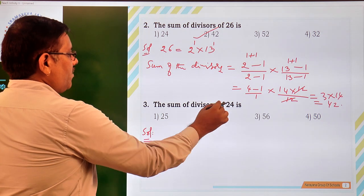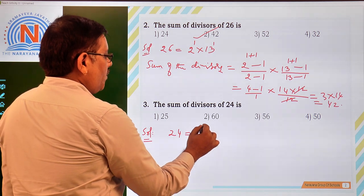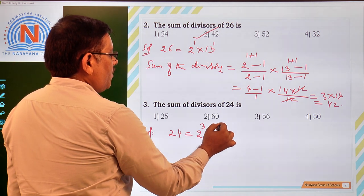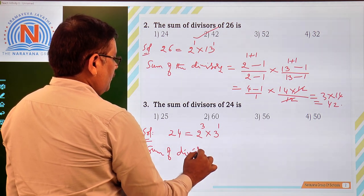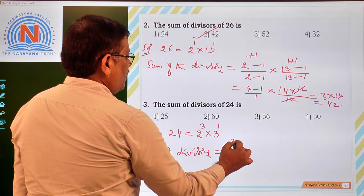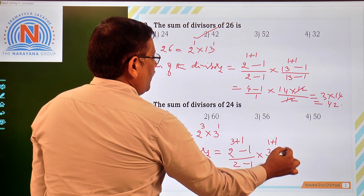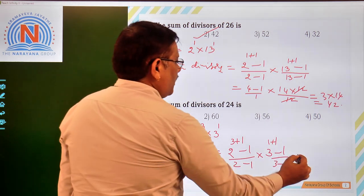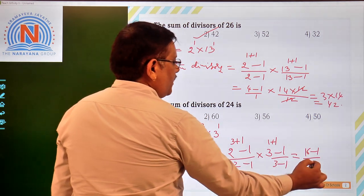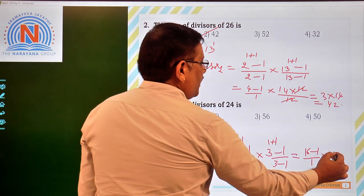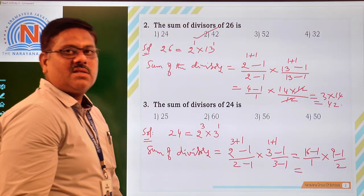Third question, sum of divisors of 24. 24 we can write as 8 into 3, 8 is nothing but 2 cube, 2 cube into 3 power 1. Sum of divisors, that is 2 to the power 3 plus 1 minus 1 by 2 minus 1 into 3 to the power of 1 plus 1 minus 1 by 3 minus 1. The same formula. That is going to be 2 power 4, that is 16 minus 1 by 2 minus 1, that is 1, into 3 square, that is 9 minus 1 by 3 minus 1, that is 2.